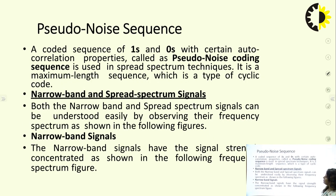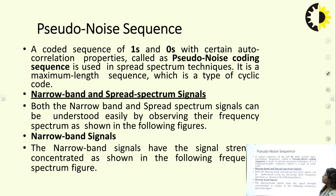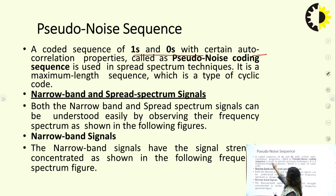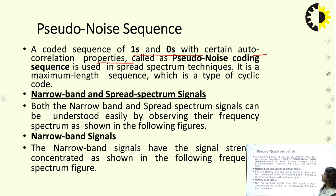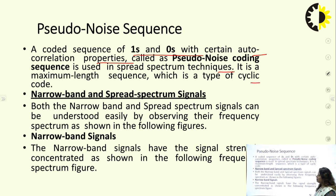For spread spectrum communication, we use pseudo noise sequences. These sequences are a coded sequence of ones and zeros with certain autocorrelation properties. They are called pseudo noise coding sequences or PN sequences and are used in spread spectrum techniques. A PN sequence is a maximum length sequence, which is a type of cyclic code.